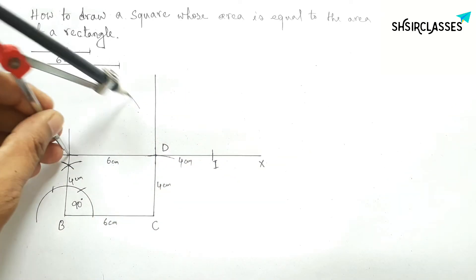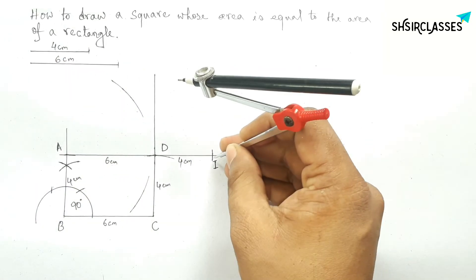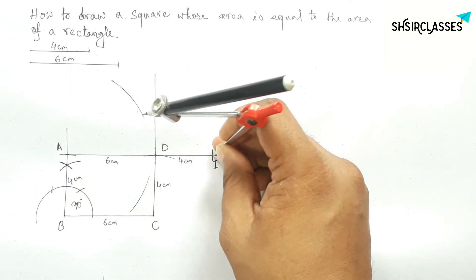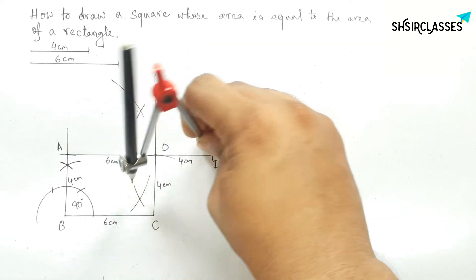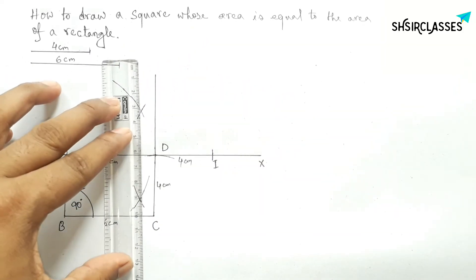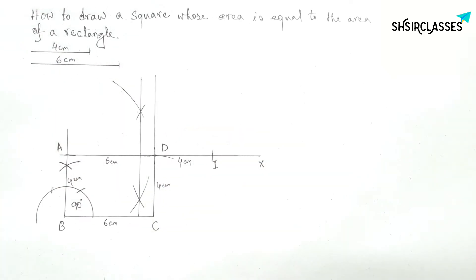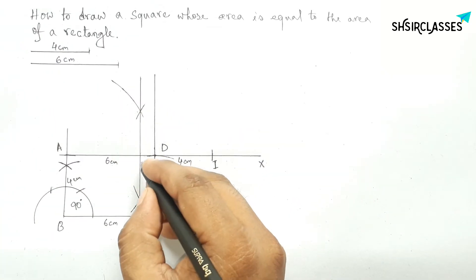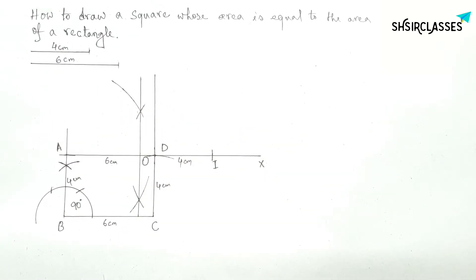Next, bisecting the line AI. Putting the compass on point A and taking greater than half of AI, drawing an arc. Now putting the compass on point I with the same length, cutting here and here. Joining this bisector, which bisects line AI at a point — taking this point as O.